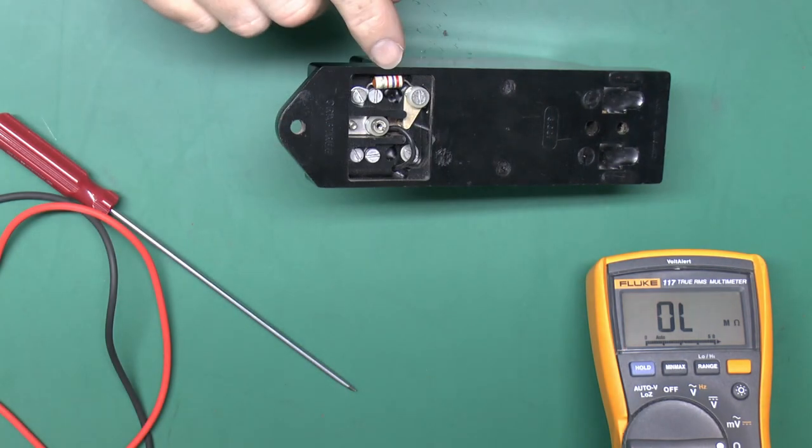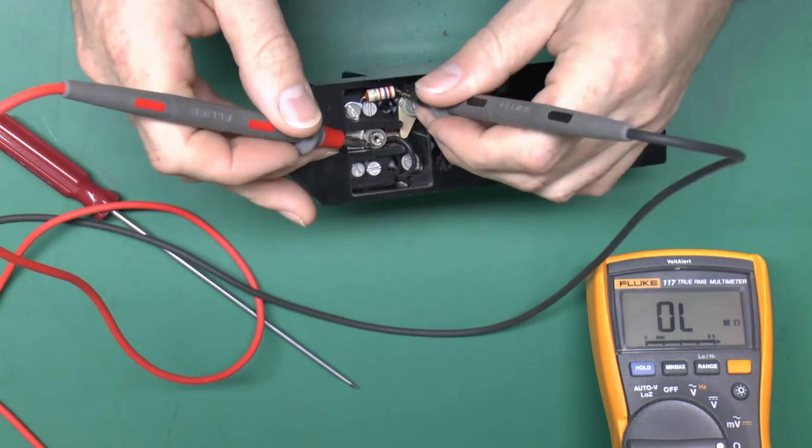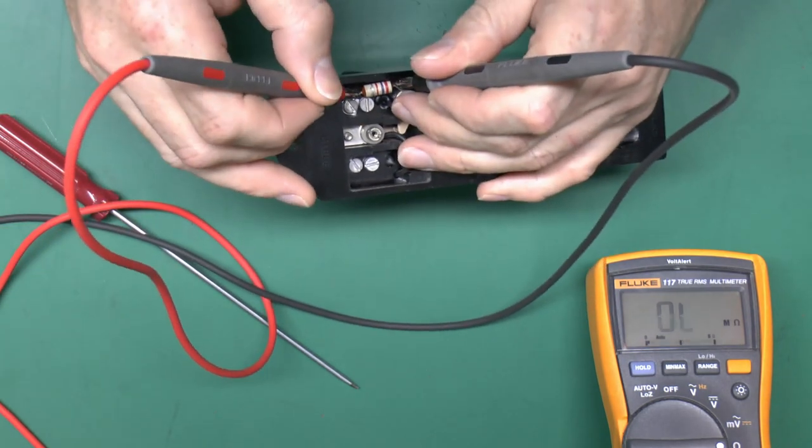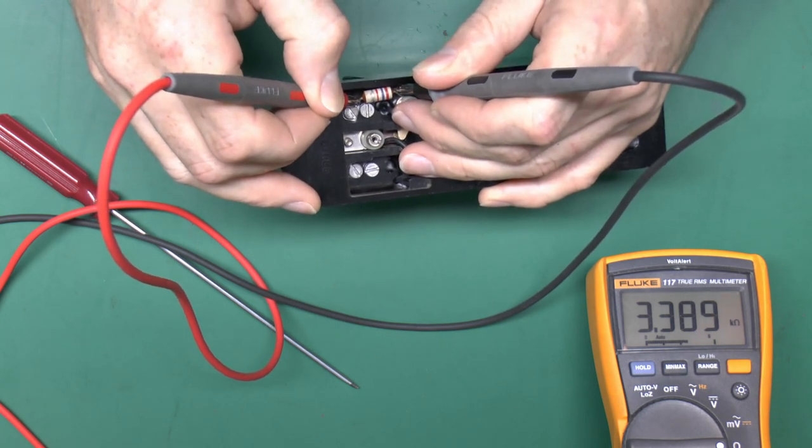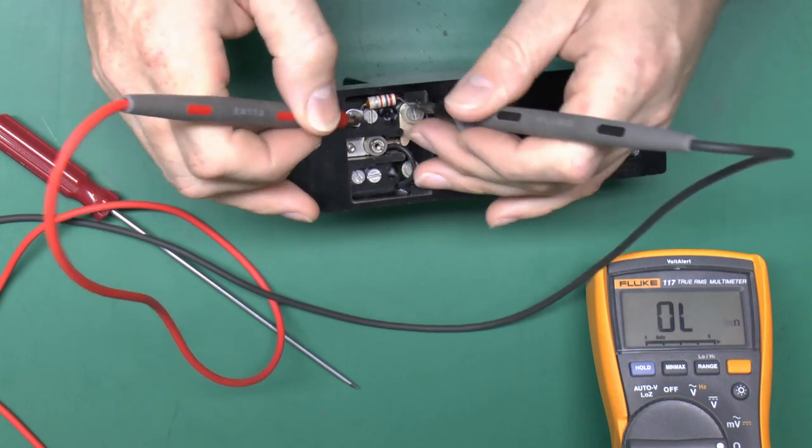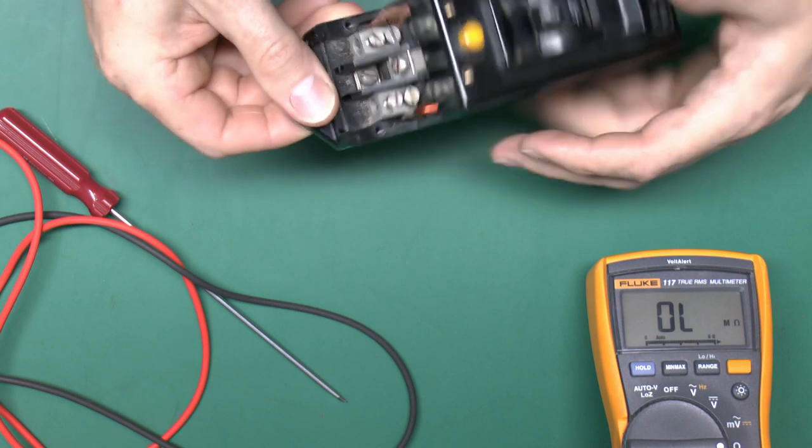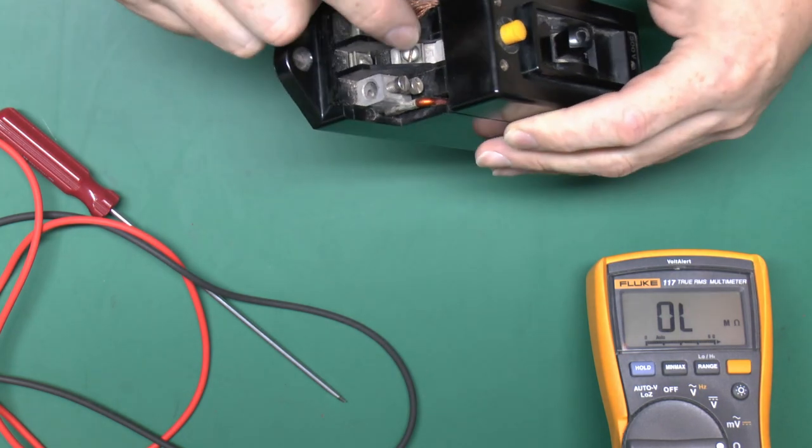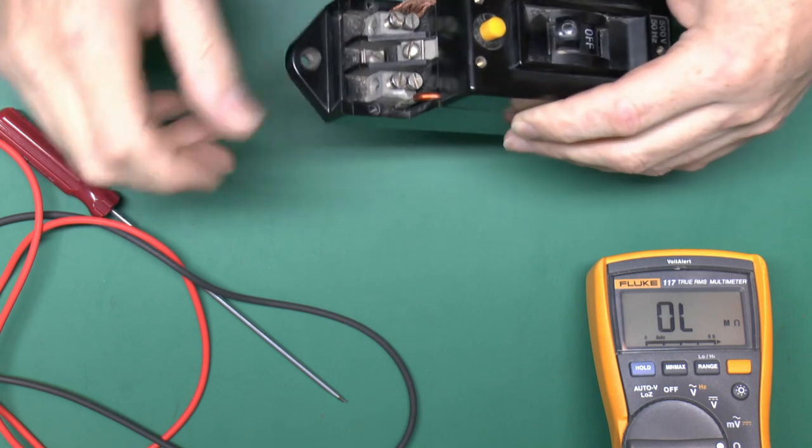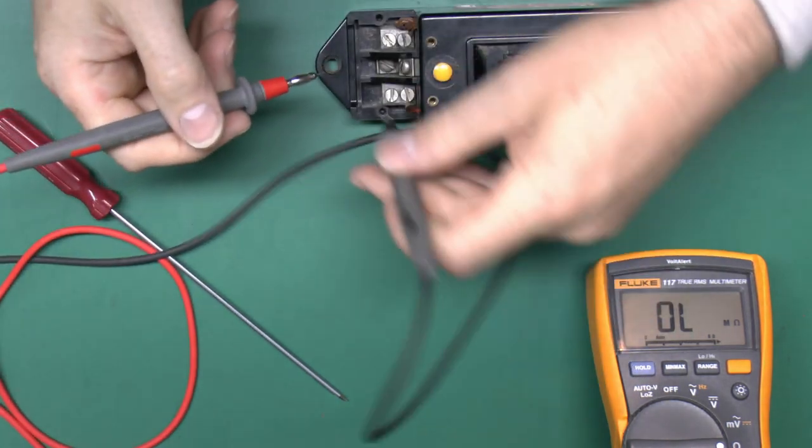Now with the back open here we can do a couple of checks. We've just checked the value of that resistor in there, and we've got a value of just 3.4k or thereabout, so that doesn't seem entirely unreasonable. The other thing we can check is the coil, which will be connected between the two terminals here, the E and the F terminals.